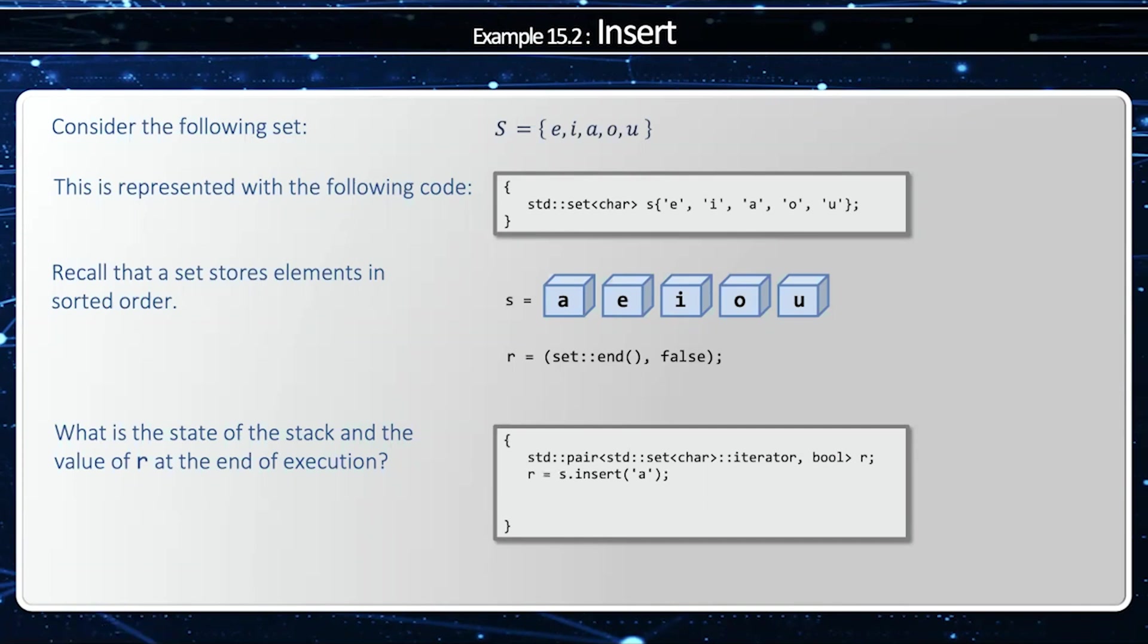So when I say s.insert(a), notice how 'a' is already there. Then I'm going to get a pointer to 'a' and I'm going to get false in the second part of the pair, which says I did not insert something new.